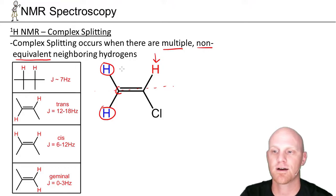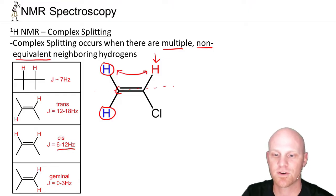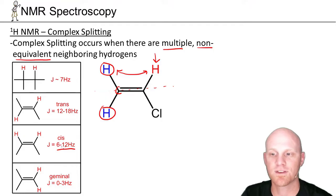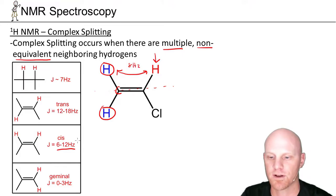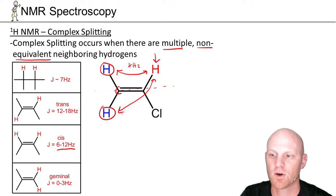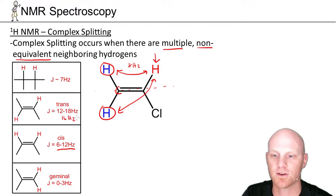Looking at the relationship between the red hydrogen and one neighbor — they are cis to each other. Being cis, we expect the J value to be somewhere in the 6 to 12 hertz range; let's say it happens to be 8 hertz. Then looking at the relationship between the red hydrogen and the other neighbor — they're trans to each other. We see the trans coupling in the 12 to 18 range; let's say it's around 16 hertz.